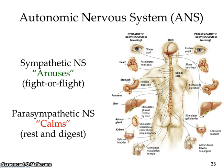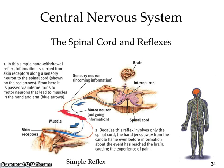In fight-or-flight, say there's a fight on campus — with the sympathetic nervous system you either run to the fight or run away. Your body is aroused enough to keep you running those five miles to clear the situation. Once you're done running and exhausted, your body calms down and you're in a parasympathetic state.